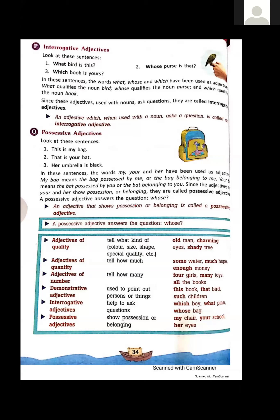Next, possessive adjectives. These adjectives show belonging. For example, 'This is my bag' means this bag belongs to me. 'That is your bag' means that bag belongs to you. 'Her umbrella is black' means the umbrella belongs to her. The words which show belonging are called possessive adjectives — an adjective that shows possession or belonging.